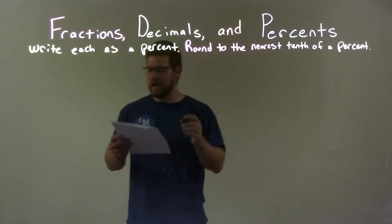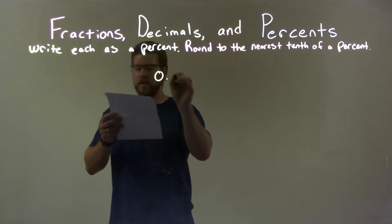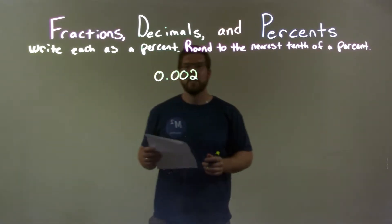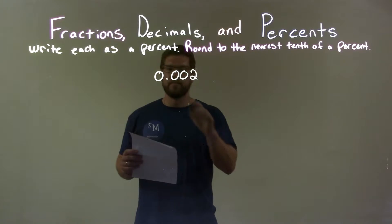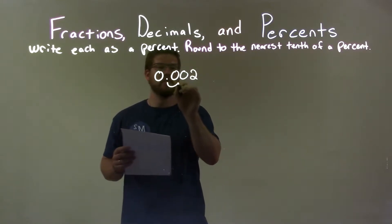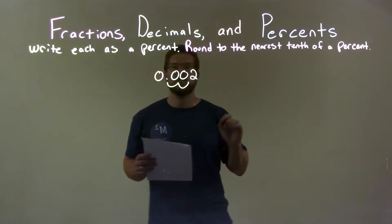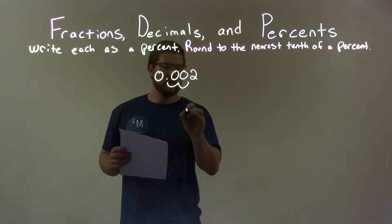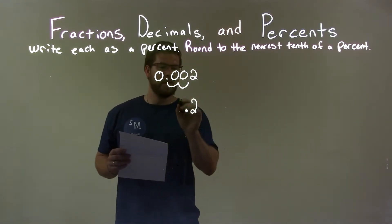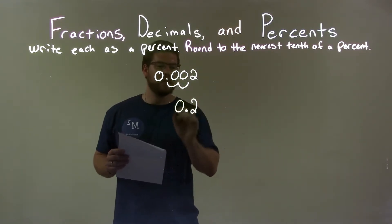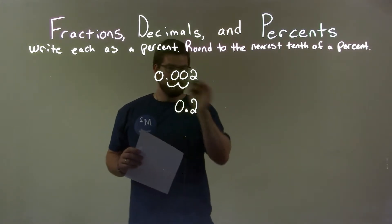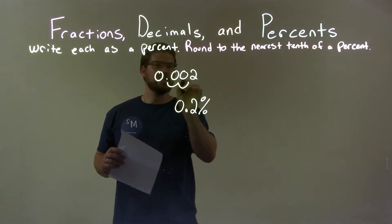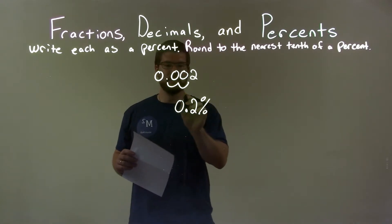If I was given this decimal, 0.002, I need to write this as a percent. I take this decimal place and I move it two spots to the right — two spots to the right. That gives me the decimal place right there. I have a 2 and the 0 that's in front of the decimal place. Now I have my percent: 0.002 is the same thing as 0.2 percent.